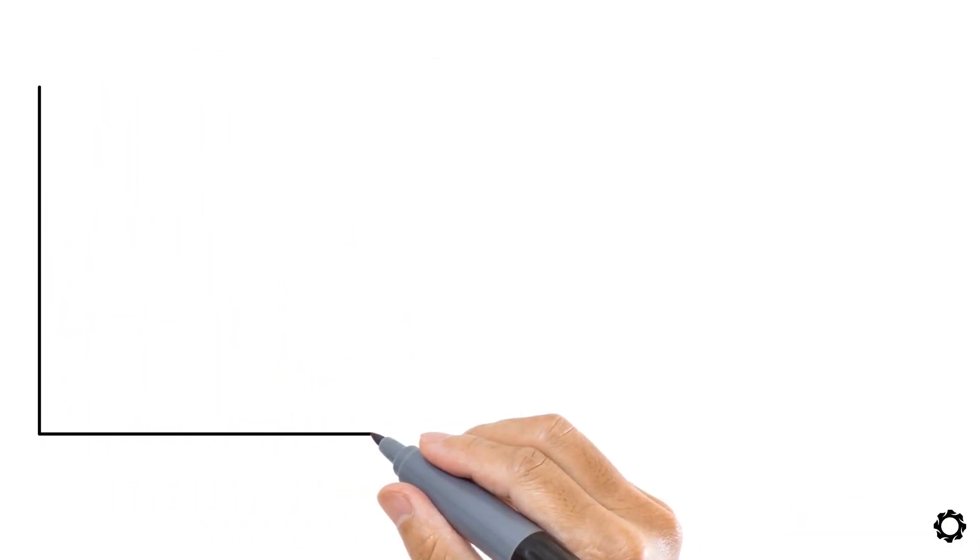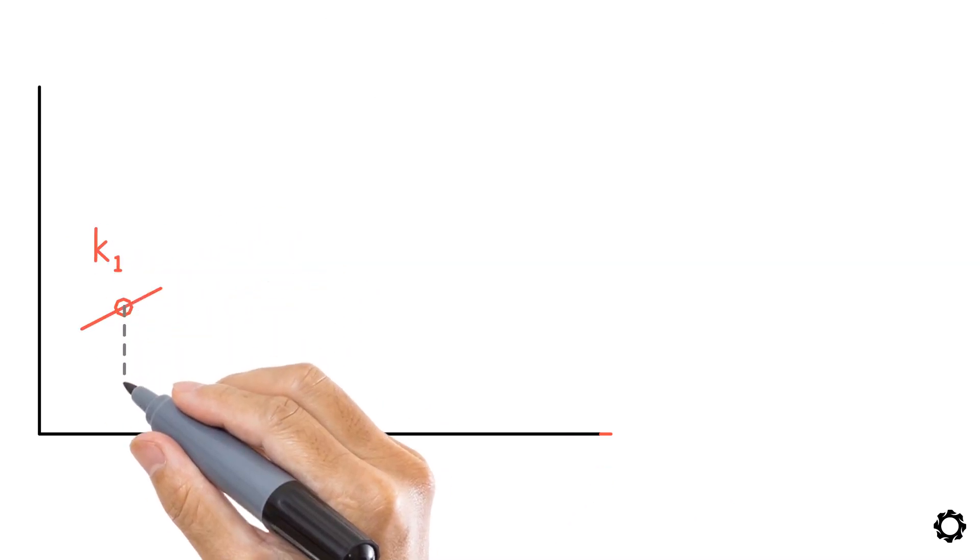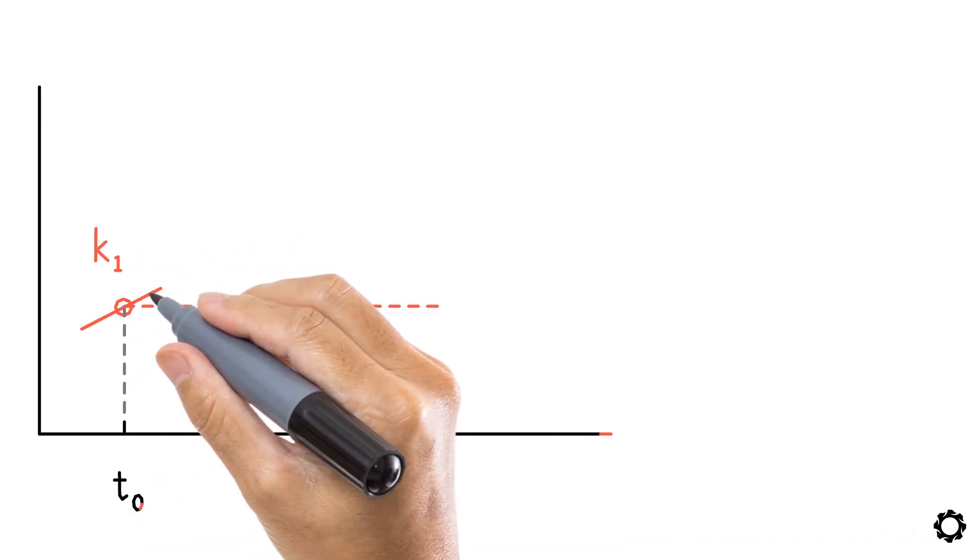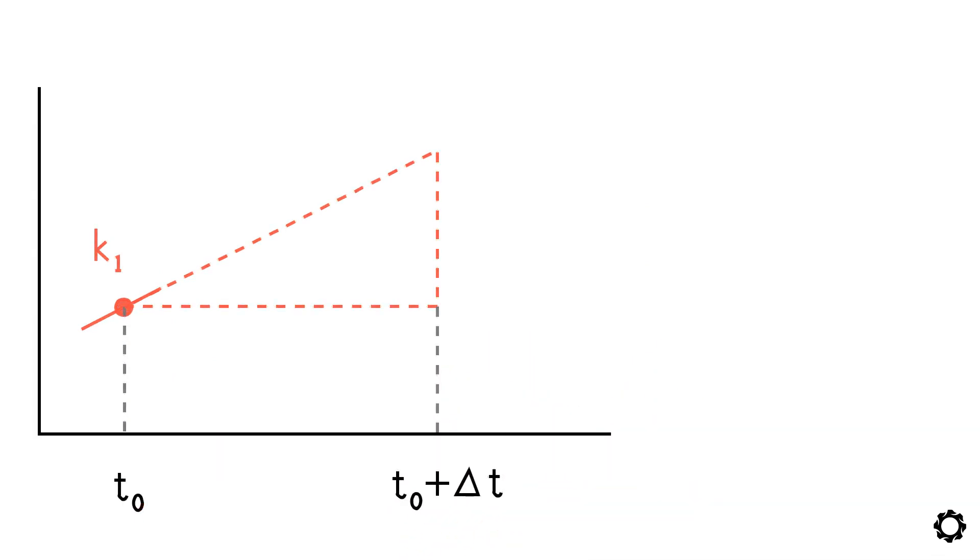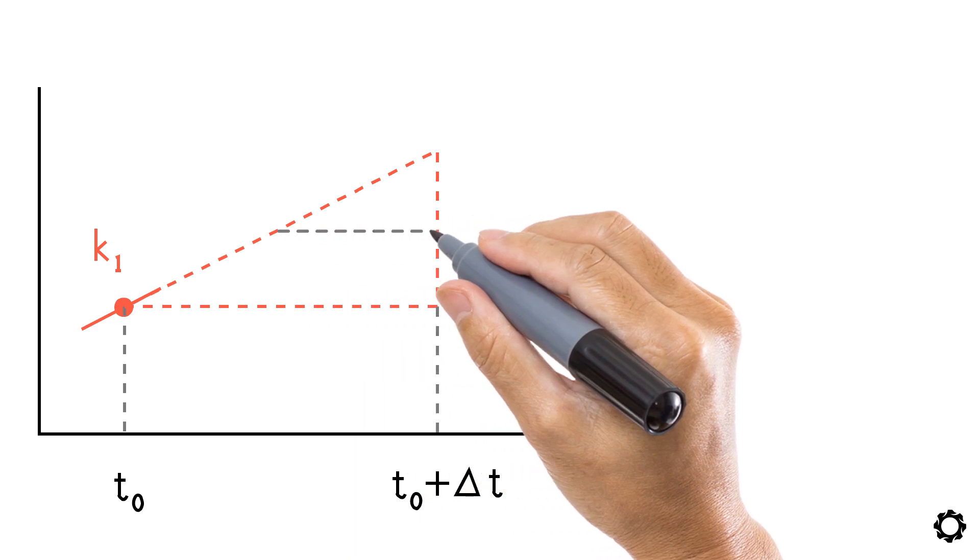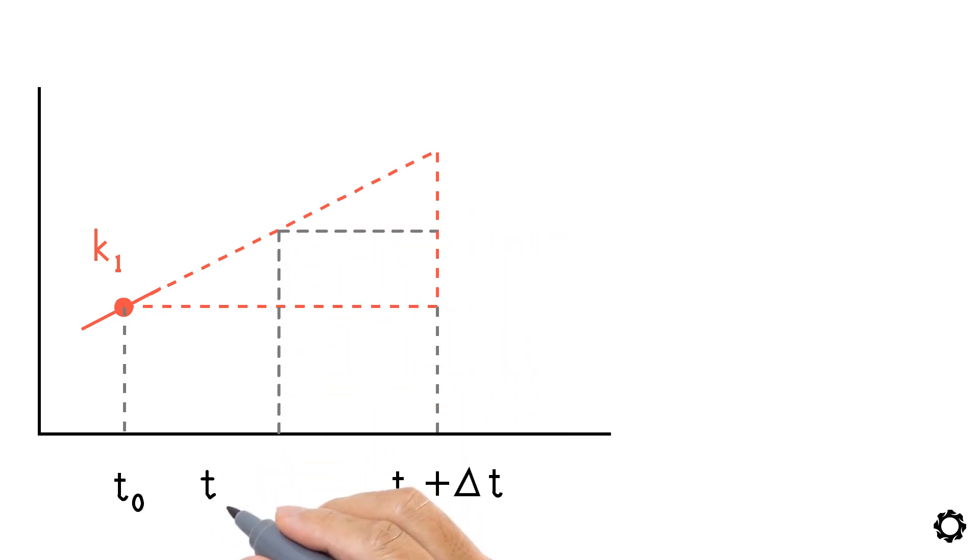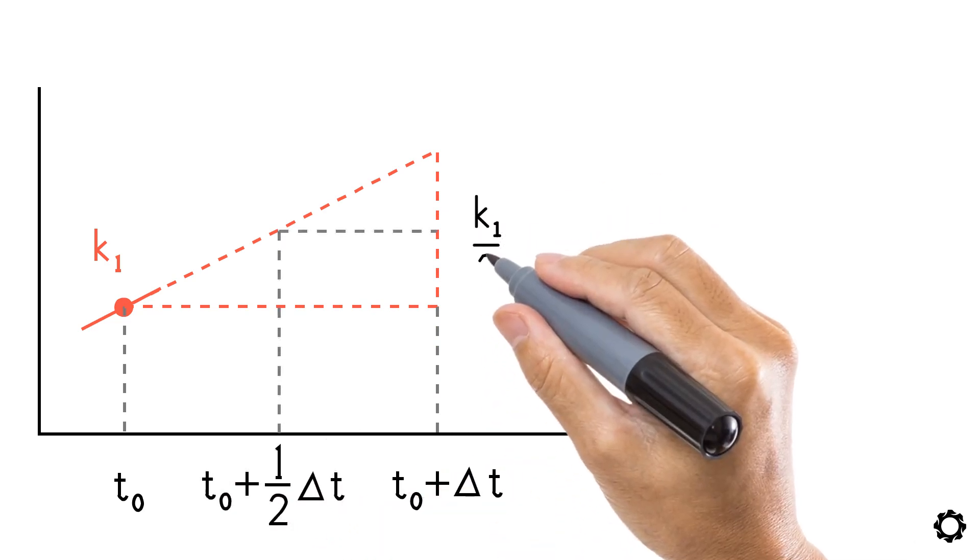First, we calculate the derivative or the slope k1 at the beginning of our time interval, and then create a triangle by projecting the derivative to the end point of the interval. Then we can determine its half-height point where we draw a horizontal line. We also draw a vertical line in the middle of our time interval, so that these two lines will intersect with each other at the midpoint.